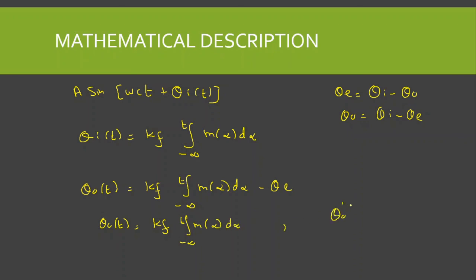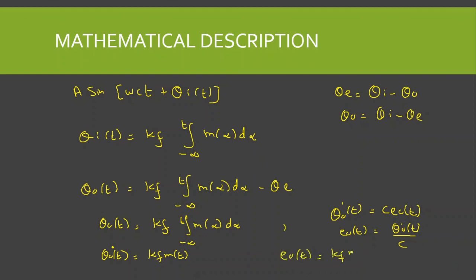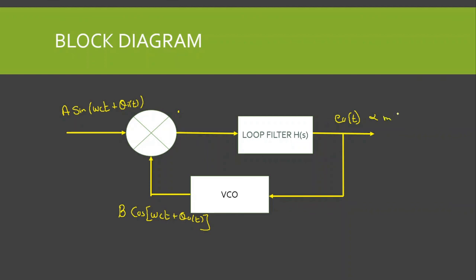Recall from equation 2 that dθ₀/dt = c·E₀(t), which means E₀(t) = (1/c)·dθ₀/dt. Taking the derivative of θ₀ gives dθ₀/dt = Kf·M(t). Therefore E₀(t) = Kf·M(t)/c. Since Kf and c are both constants, the output signal is proportional to the message signal M(t). In this way, the PLL acts as a frequency demodulator — its output extracts the message signal from the incoming FM modulated wave.